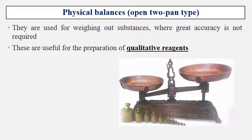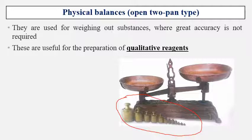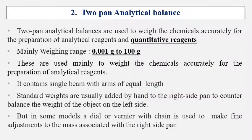Here you can see the different weights. Usually we will keep the weights in the left pan and the substance we want to weigh on the right side. The two-pan analytical balance is used for weighing of chemicals accurately for the preparation of analytical reagents.